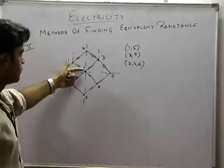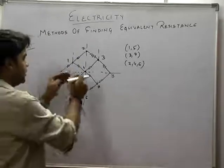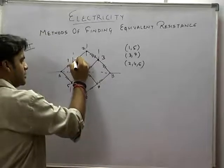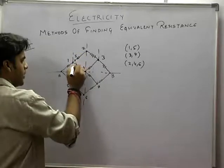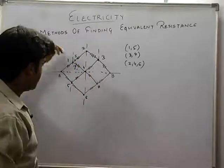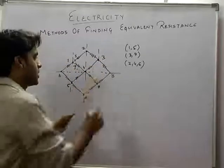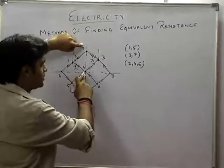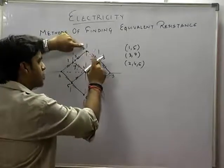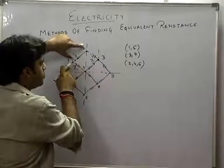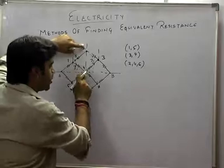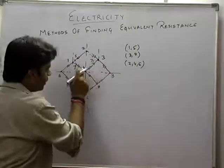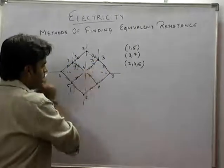Ab 2, 4, and 6 ka matlab kya hua — jab equipotential pe hain, to agar mein yahan se dekhoon, to kya ho raha hai ki yahan pe let us suppose I current gaya, yahan pe I1 current gaya. To ab jab equipotential pe hain, to I1 current hi yahan se wapas aayega. Ye 2 aur 4 ka equipotential ka matlab kya hai — ki jitna current is arm mein hai, utna hi current is arm mein hai. That means ki jitna current yahan se ja raha hai, utna hi current point 3 par bahar aa jayega. That means ki jo current yahan se ja raha hai, wo yahan jayega — inna yahan pe jayega. To mein in dono points ko alag kar sakta hoon.